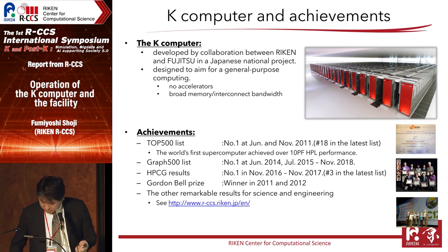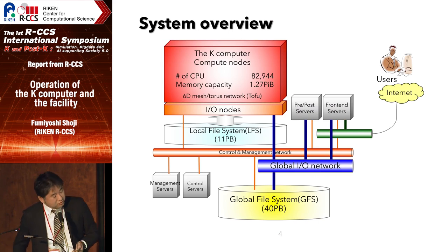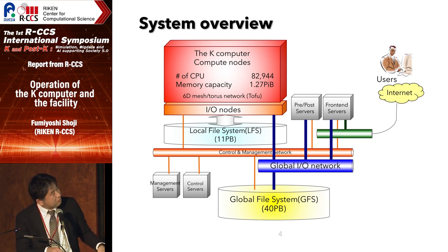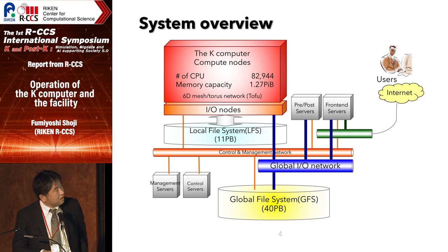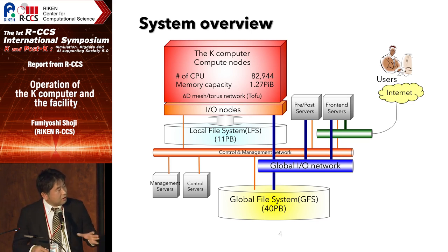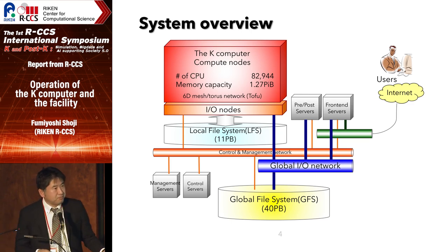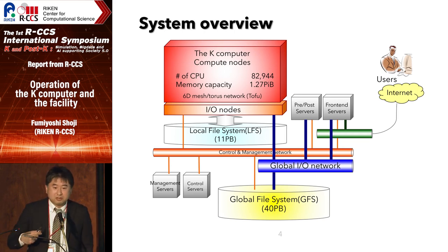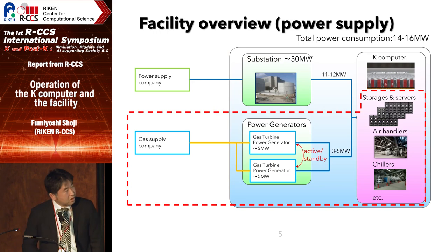This is the block diagram of the K-Computer. I want to point out that the K-Computer has two types of storage systems. One is called the local file system, LFS, which has broader I/O bandwidth but relatively small capacity. On the other hand, we also have the global file system, GFS, which has bigger capacity but not as broad bandwidth. User permanent files are located in the GFS, and LFS is used as staging storage.